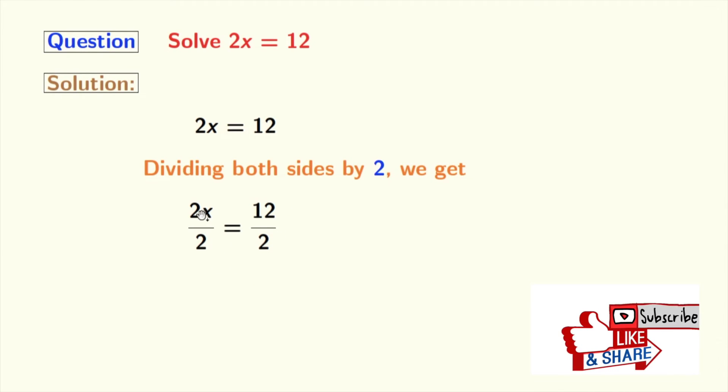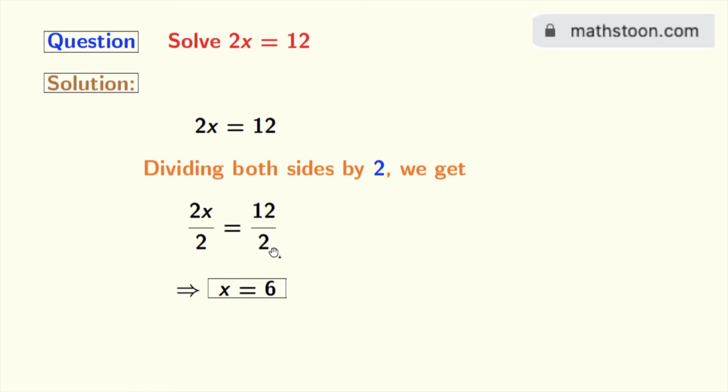Now on the left hand side, 2 gets cancelled, so we are left with x. And on the right hand side, 12 by 2 is 6. So finally we get x is equal to 6 as our answer.